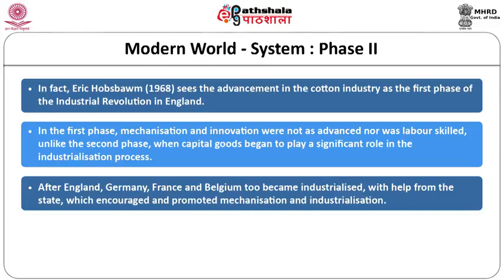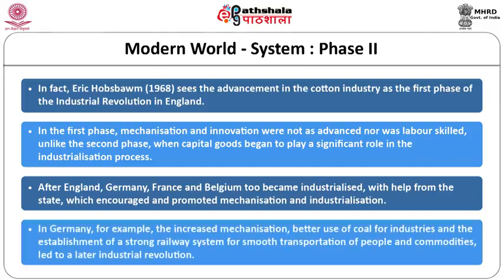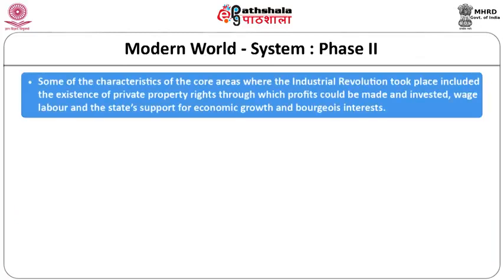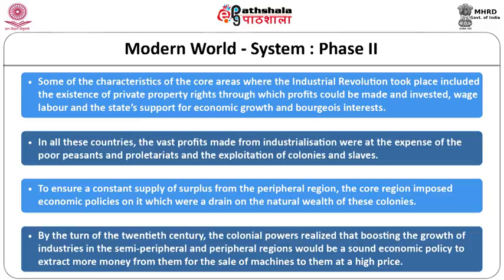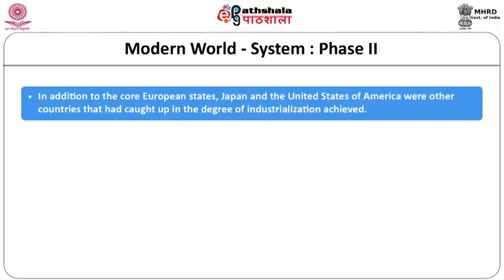After England, Germany's industrialization was driven by increased mechanization, better use of coal, and a strong railway system. Characteristics of the core industrial areas included private property rights, wage labor, and state support for economic growth and bourgeois interest. The vast profits from industrialization came at the expense of poor peasants, the proletariat, and the exploitation of colonies and slaves. By the turn of the 20th century, colonial powers realized that boosting industry in semi-peripheral and peripheral regions would extract more money from them through sale of machines. Japan and the United States also achieved significant degrees of industrialization.